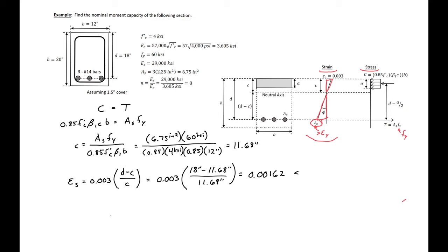So this is less than our yield strain which is 0.0021, which we can remember is just our yield stress divided by our modulus of elasticity for our steel. So since we aren't yielded, since we're less than yield, our initial assumption is no good. So we need to reanalyze our section and calculate the actual strain in our steel at the nominal failure.